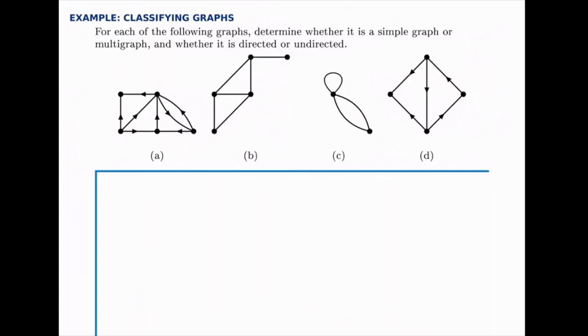For each of the following graphs, determine whether it's a simple graph or a multigraph, and whether it's directed or undirected. So for each one of these, we're going to have two decisions to make. Is it simple or multigraph? Is it directed or is it undirected?